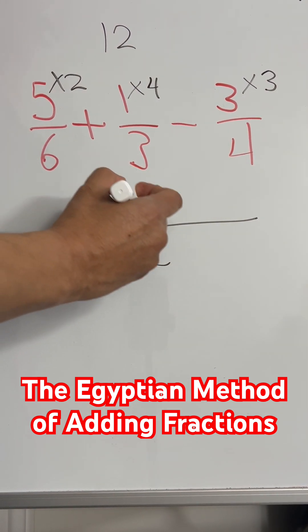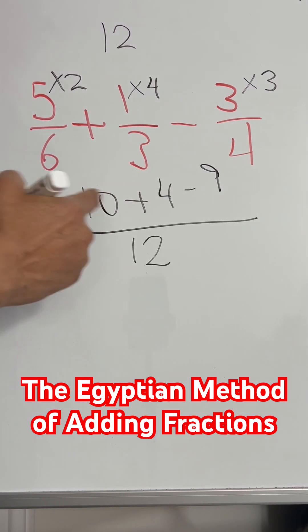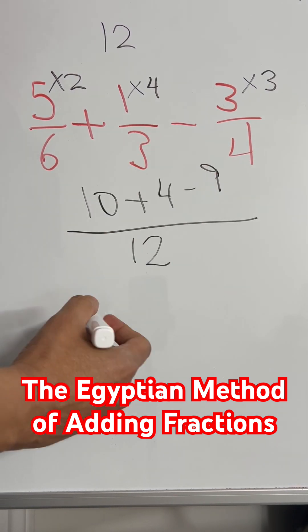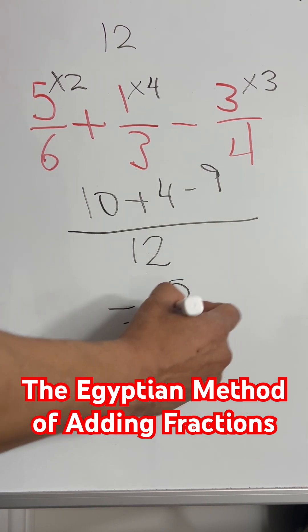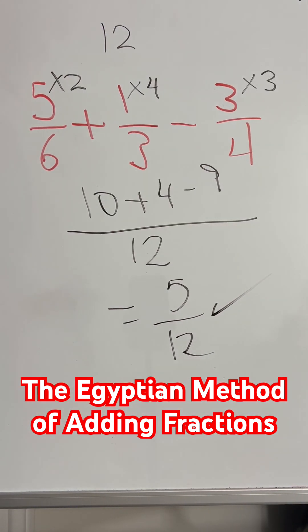Now you get 10, plus 1 times 4 is 4, minus 3 times 3 is 9. So 10 plus 4 is 14, minus 9 is 5 over 12, the best way to add and subtract fractions.